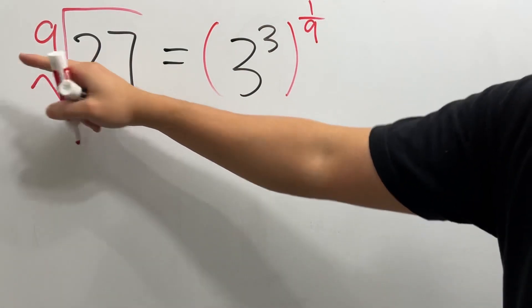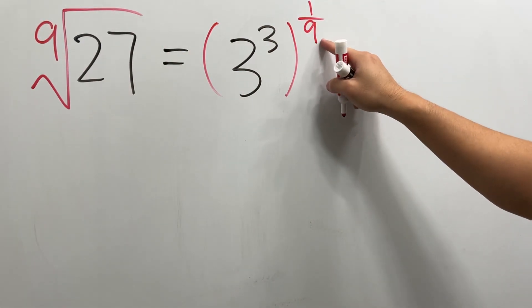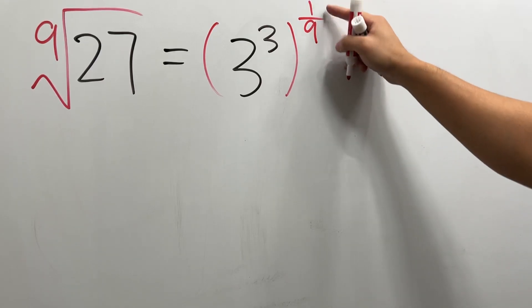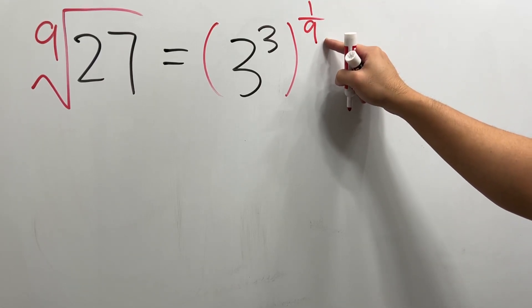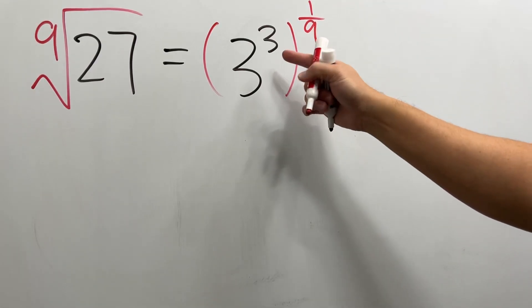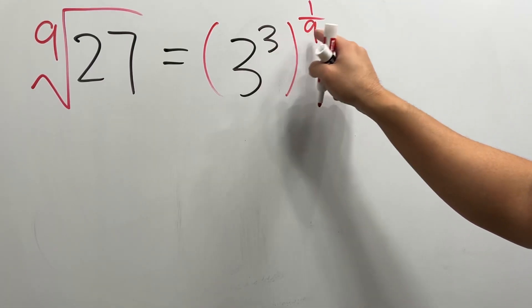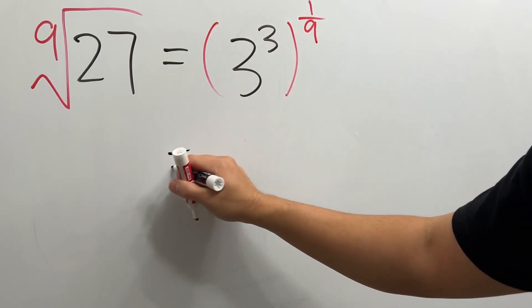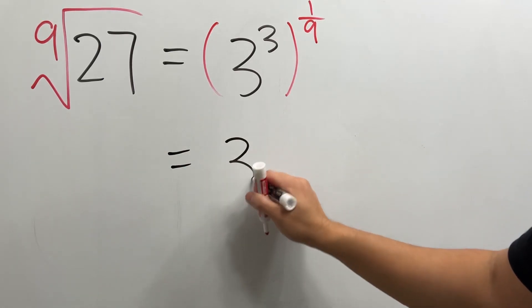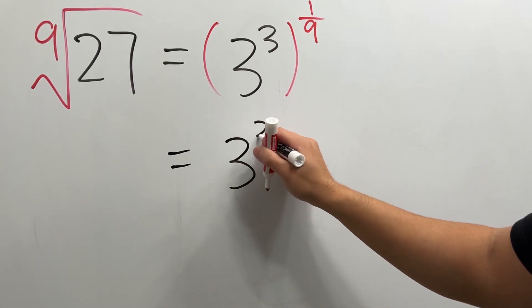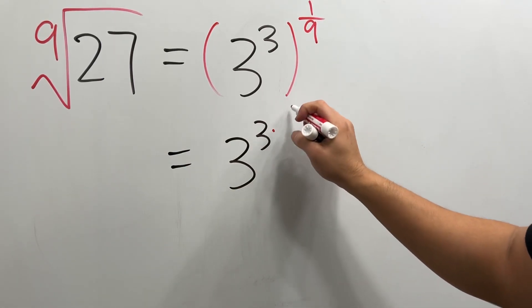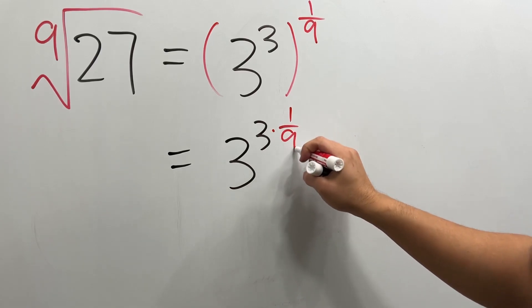So the index becomes the denominator of this rational exponent. Then by the rule of exponents, we can just multiply these two exponents. This is 3 raised to the 3 times 1 over 9.